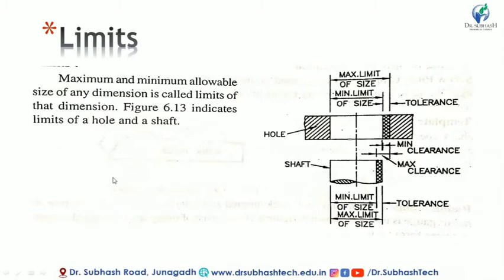What is a limit? Here we have the shaft and the hole. The tolerance is shown here. This is the tolerance for the shaft and the tolerance for the hole. Here is the minimum clearance and here is the maximum clearance. The maximum limit of size for the shaft, the minimum limit of size for the hole, and the maximum limit of size for the hole.